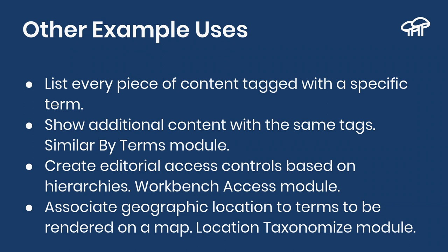You can also use taxonomy terms to show more articles with the same term — a module called Similar by Terms. You can use taxonomy vocabularies to assign permissions using a module called Workbench Access, which associates a user with a taxonomy term and grants or denies access to parts of the website based on that relationship. Because vocabularies can have fields, you can create an address field to attach geographical information, so when you tag an event as happening in Boston or San Francisco, you can extract that data to locate a pin on a map. Anything we've covered can be combined however you want for displaying purposes.